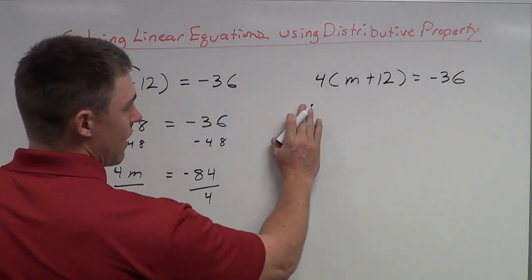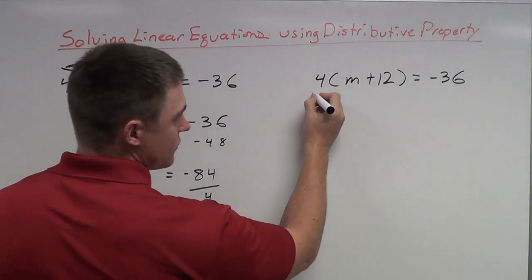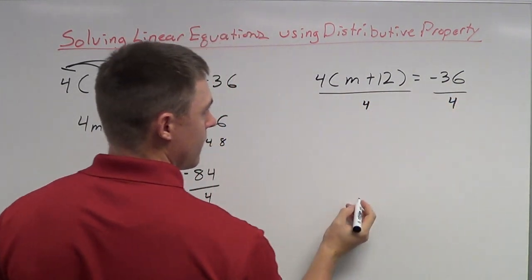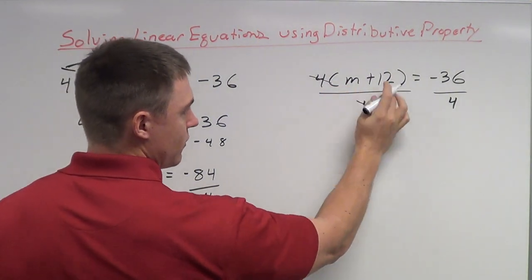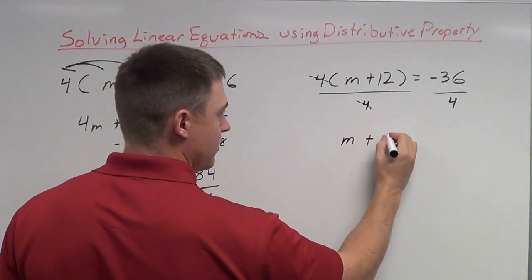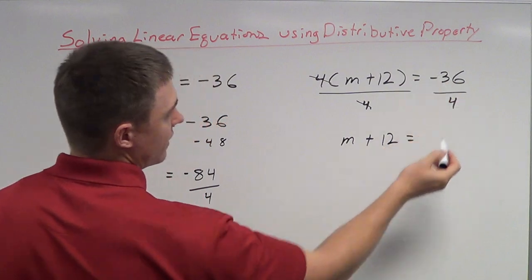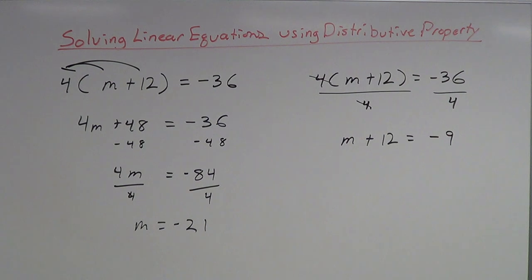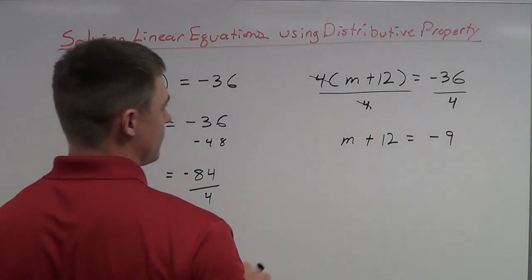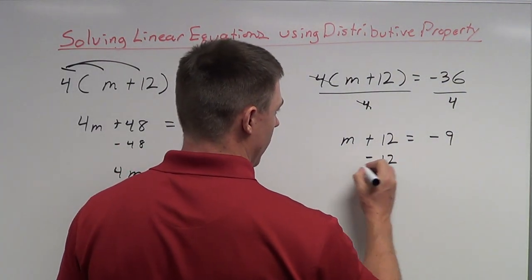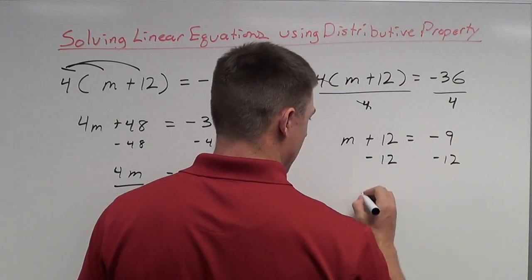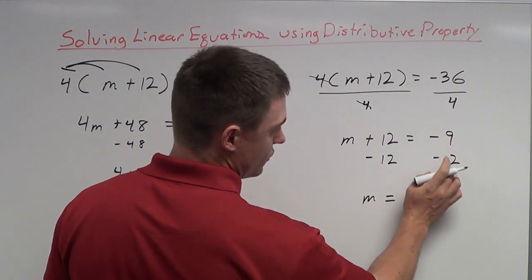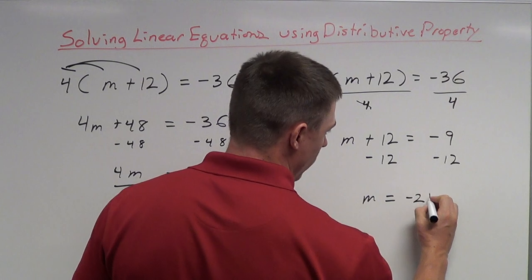So the first thing that I would do is to get rid of this 4. So I'm going to divide by 4. Those cancel. I'm left with just what's inside the parentheses. M plus 12 equals, I'm going to divide here. 4 goes into 36, negative 9 times. All right. Now, as you can probably see, this is going to be a shorter method of solving because now the only thing I have to get rid of is this 12. So I just subtract 12 from both sides. M is then equal to negative 9 and negative 12. That makes it negative 21.